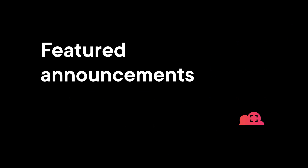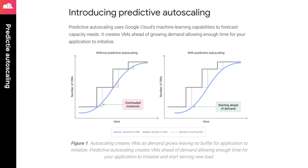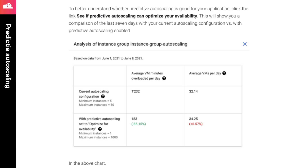Let's jump right into our featured announcements for this month. In a previous episode, we talked about using predictive auto-scaling for your infrastructure on GCP. This feature for Compute Engine is out of preview and is now generally available. It enables the service to look at your CPU history for your managed instance groups and use machine learning to determine the number of VMs that are needed. In many cases, this can highlight a need for scaling before you even realize it's needed.